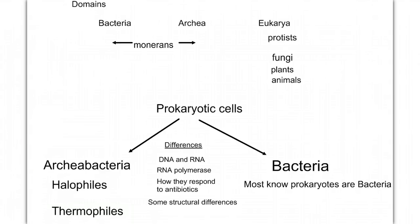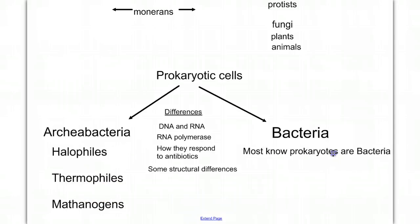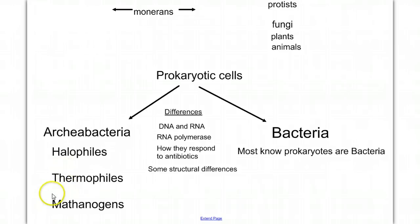We're going to talk first about the archaeobacteria, and then spend most of our time with what most known prokaryotes are — the true bacteria. The archaeobacteria includes some very interesting types: the halophiles, the thermophiles, and the methanogens. Collectively, these are sometimes referred to as the extremophiles — bacteria that live in very extreme conditions, possibly similar to early Earth conditions.